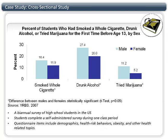This is an example of prevalence measures of health risk behaviors from a cross-sectional study. Here is an interpretation of the prevalence of having tried marijuana. In 2007, 11.2% of male students and 5.2% of female students had tried marijuana for the first time before age 13 years.